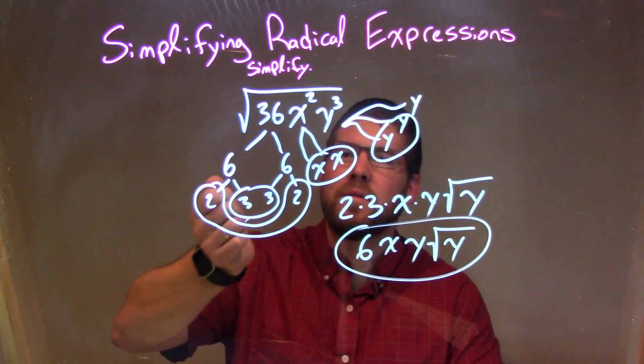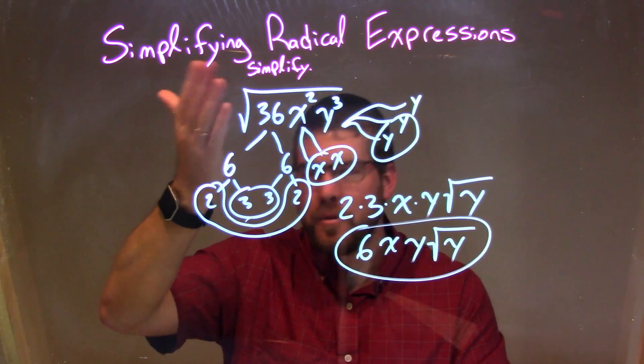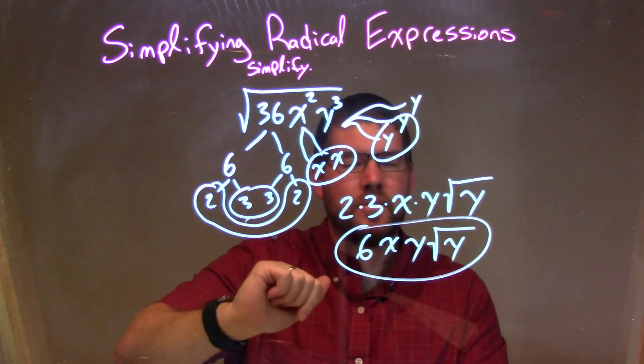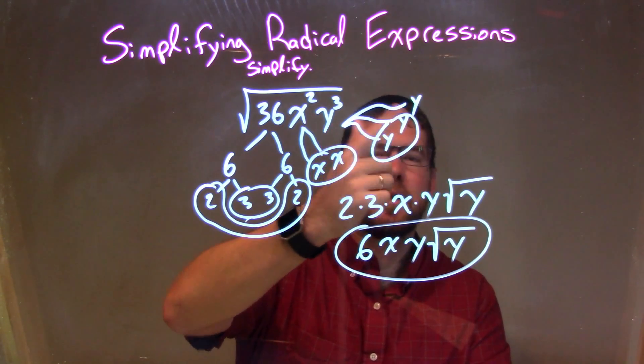So let's recap. We're getting the square root of 36x squared y to the third. We performed prime factorization on this. 36 broke down to be 2 times 3 times 3 times 2, and x squared was x times x, and y to the third was y times y times y.